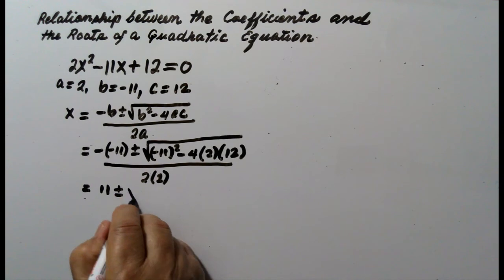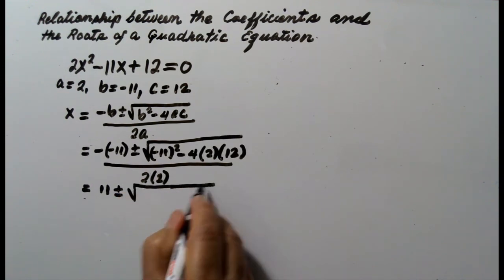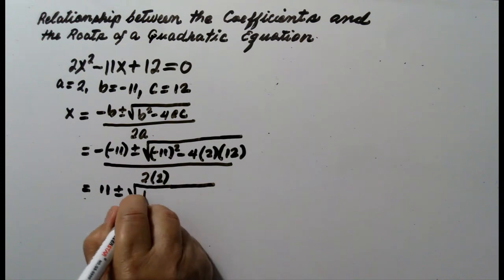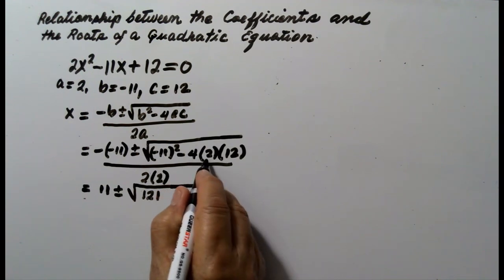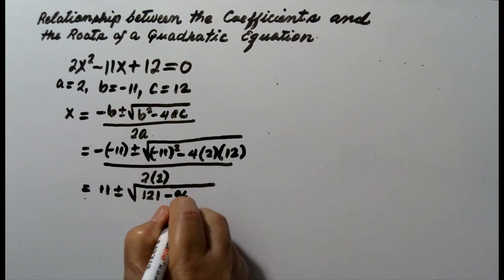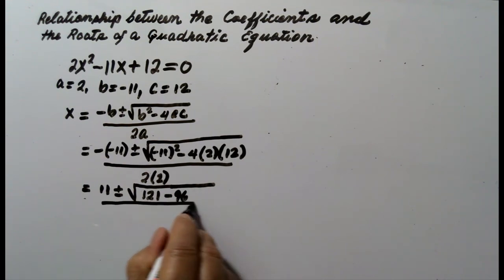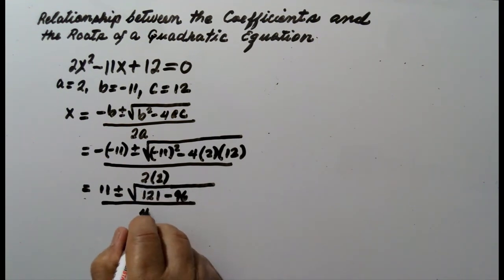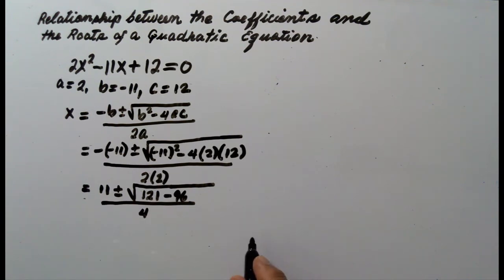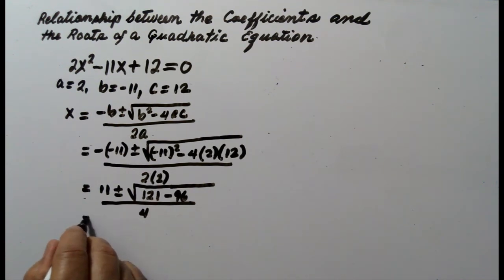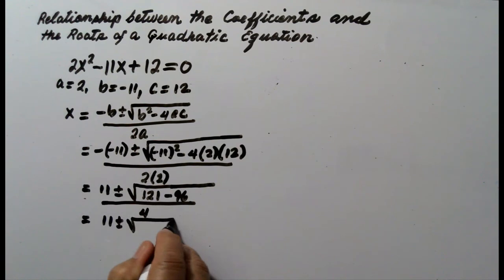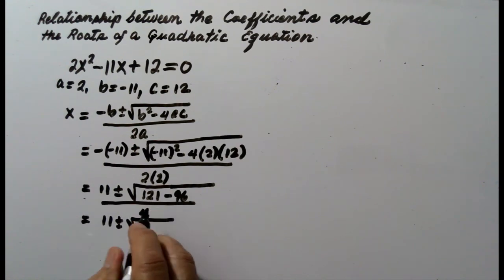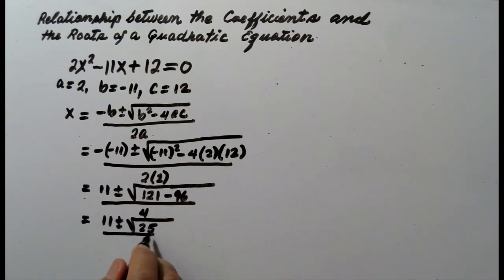This will become positive 11 plus or minus the square root of — negative 11 squared is 121 — minus 4 times 2 times 12, over 2 times 2, which is 4. So this is equal to 11 plus or minus the square root of 121 minus 96, which is 25, over 4.